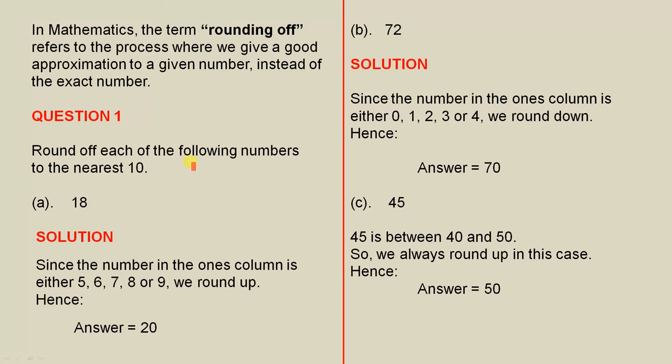Question 1: Round off each of the following numbers to the nearest 10. So here we have the number 18. Solution: Since the number in the ones column is either 5, 6, 7, 8, or 9, we round up.